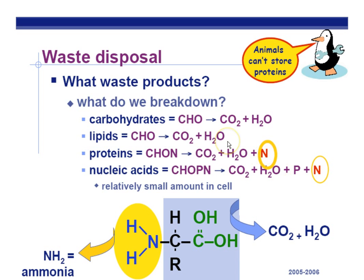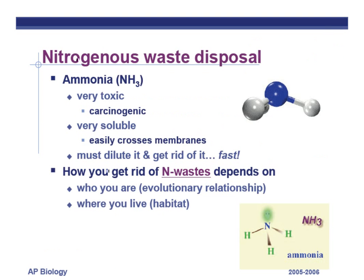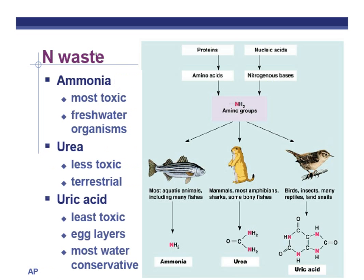Ammonia is very toxic, very soluble, and must be eliminated quickly by dilution and excretion. How you get rid of nitrogenous waste depends on what you are and where you live. Freshwater organisms simply excrete ammonia and let it be diluted — since they live in water, this is manageable. However, land animals can't dilute it with surrounding water, so two less-toxic chemicals are produced from ammonia. Mammals, most amphibians, sharks, and some bony fishes convert ammonia into urea, which is less toxic. Birds and reptiles produce uric acid, the least toxic form.